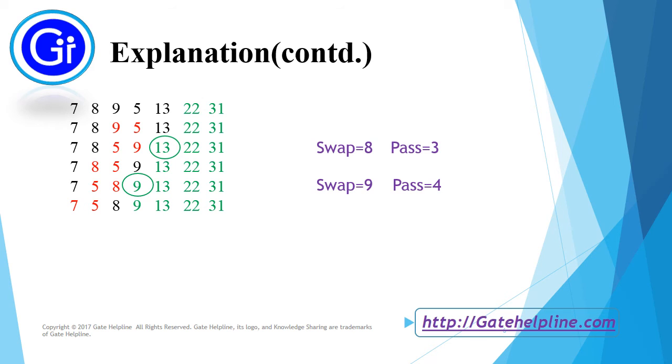After this we will check for 7 and 5. 7 and 5 are not sorted, so we swap them and consider it as swap 10. Here item 8 is at its bubble position and our pass 5 is completed.